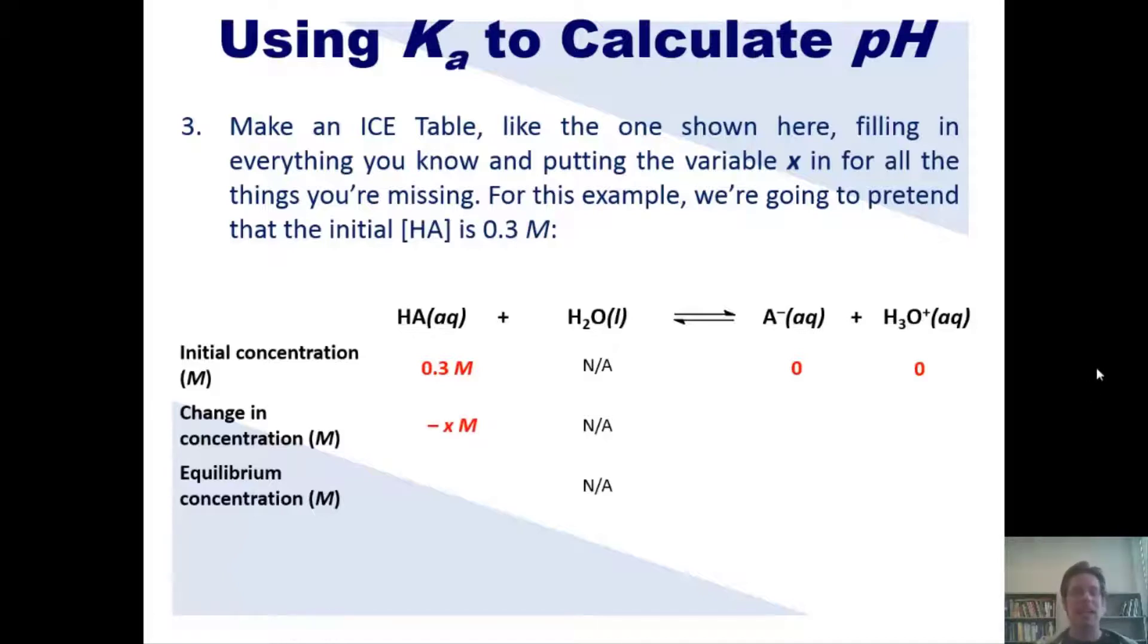So what will the values under A-minus and H3O-plus be over here? You'll notice that the stoichiometric ratio of HA to A-minus to H3O-plus is 1 to 1 to 1, which means that if I decrease the concentration of HA by X moles, the number of moles of A-minus and H3O-plus that are going to appear are also going to be X. Hopefully you're okay with that.